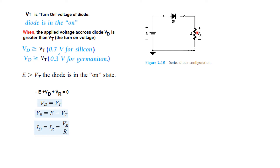For this circuit we can write the KVL equation. Starting from the left corner, we write minus E, then plus VD, plus VR equals zero. Also, as we mentioned, VD is equal to or greater than VT. From here we can write VR equals E minus VT. We also need to find the diode current or the current through the resistor — they are the same — and this can be found by the voltage across the resistor divided by the value of the resistor.